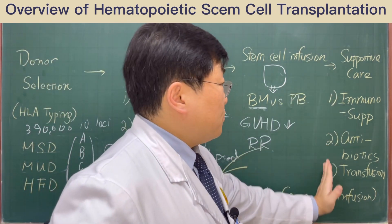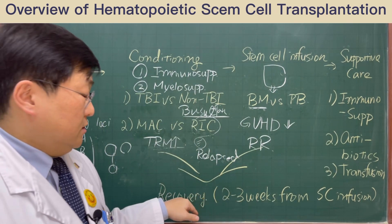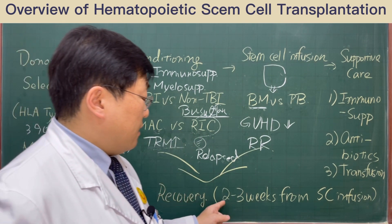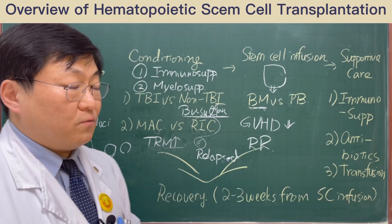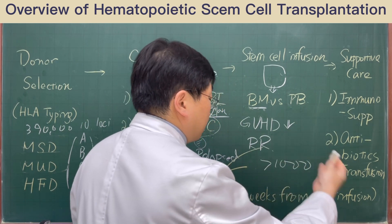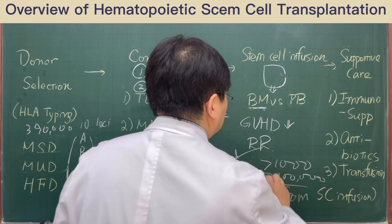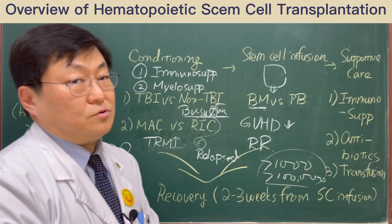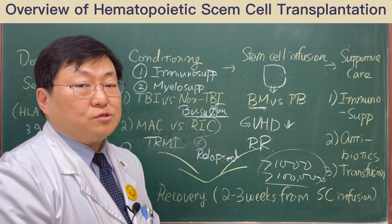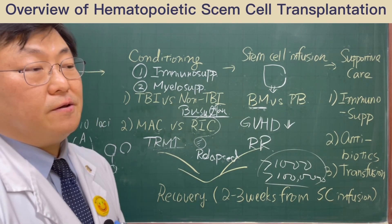After two or three weeks of supportive care, if the allogeneic cell transplantation is successfully done, the patient's peripheral blood cell counts recover completely. When the absolute neutrophil count is more than 1,000, the hemoglobin level recovers, and the platelet count is more than 180,000, the patient is transferred to the general ward and then discharged. After that, the patient follows up to receive post-transplantation monitoring and therapy.